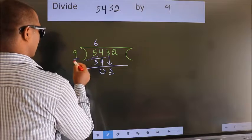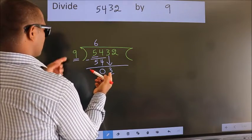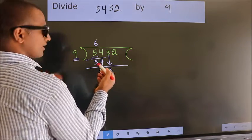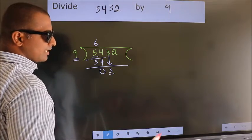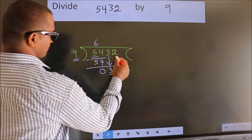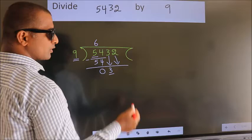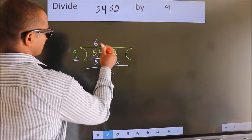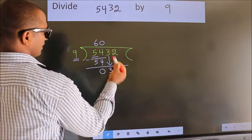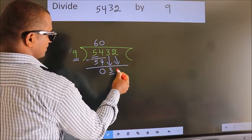Here we have 3. Here 9. 3 smaller than 9, so we should bring down the second number. And the rule to bring down second number is put 0 here. Then only we can bring down this number.